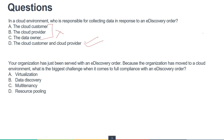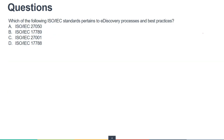Next question: Your organization has just been served with an e-discovery order. Because the organization has moved to the cloud environment, what is the biggest challenge for full compliance with an e-discovery order? The options are virtualization, data discovery, multi-tenancy, and resource pooling. Virtualization, multi-tenancy, and resource pooling are features of the cloud, not challenges. Therefore, data discovery is the correct answer and the biggest challenge in serving an e-discovery order.